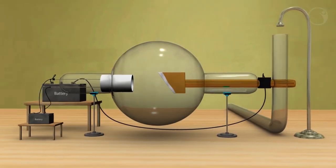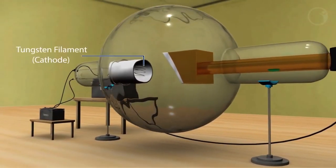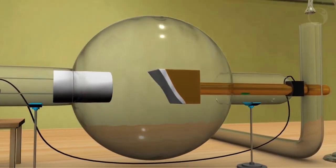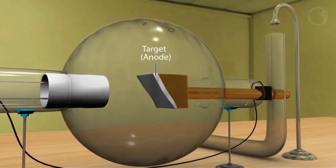It contains a highly evacuated glass bulb containing a cathode, which is a tungsten filament, and an anode, which is a target made up of metal of high atomic weight.